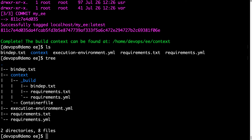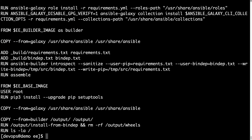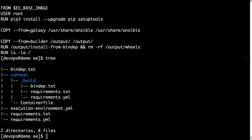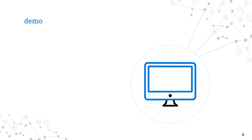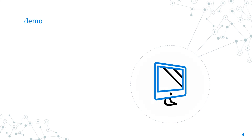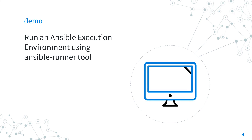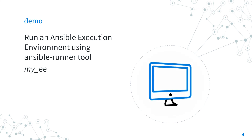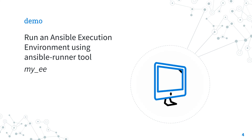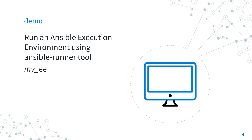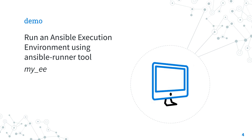There is a context directory with a container file, and in the underscore build subdirectory are the bindep requirement .txt and .yml files — this is the container image definition. Now let me show you how to run the custom myEE Ansible execution environment using the Ansible Runner tool.